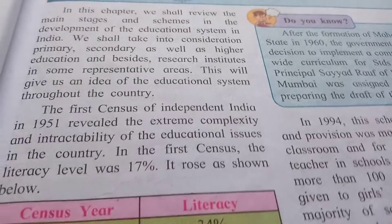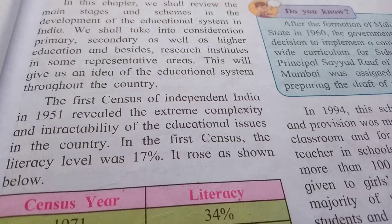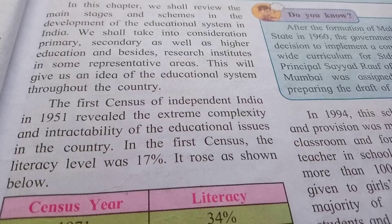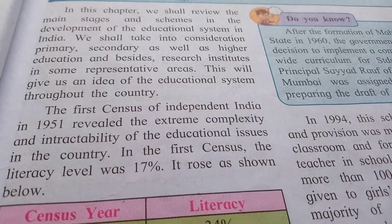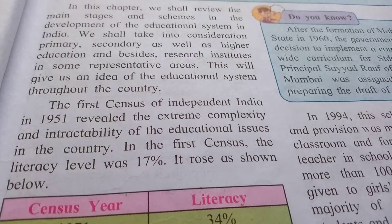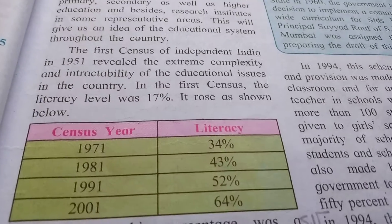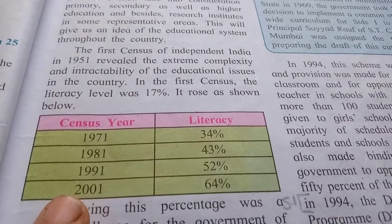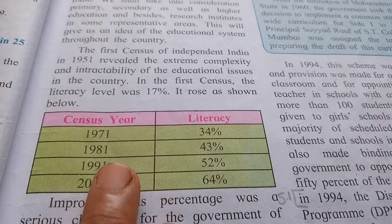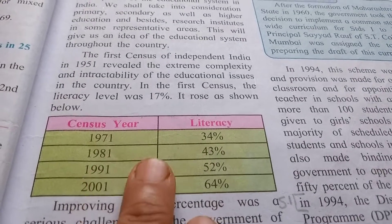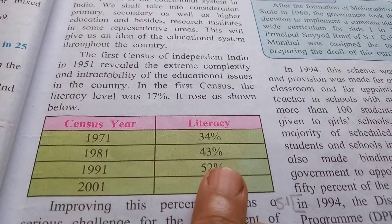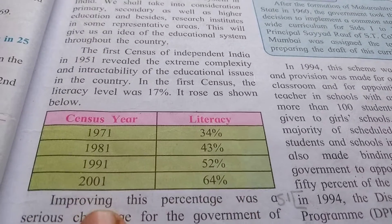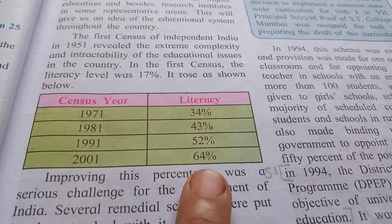When the census was taken in 1951, it was said that only about 17% of people were literate. Later on, it increased. In 1971 it was 34%, in 1981 it was 43%, in 1991 it was 52%, and in 2001 it was 64%.